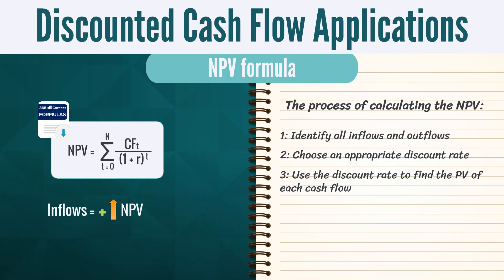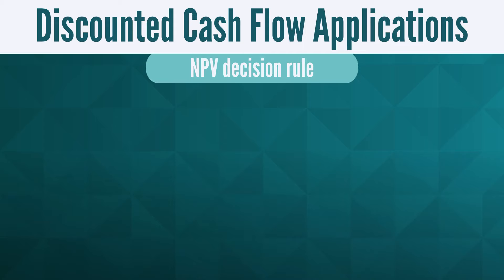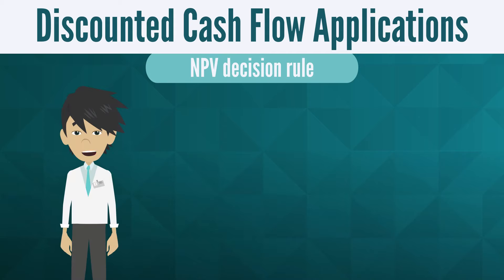Inflows are positive and increase the NPV, while outflows are negative and decrease the NPV. In the end, we sum all discounted cash flows and find the net present value of the investment.